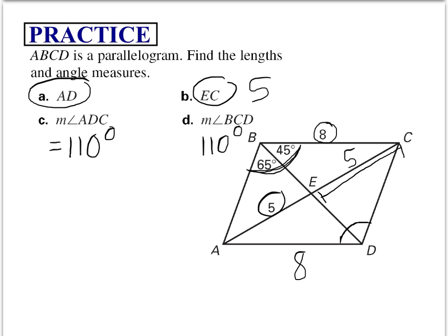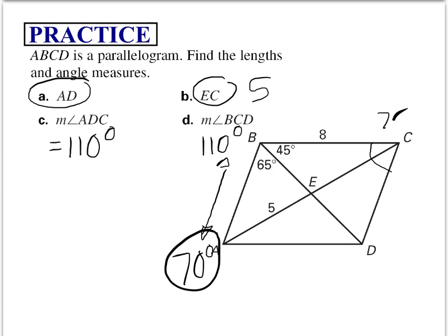Now let me just erase some of this here. Now let's look at the measure of angle BCD. So BCD is this angle here. Now we know this angle is 110, and we know that consecutive angles need to be supplementary. So if this is 110, that means A needs to be 70. If A is 70, then this angle is 70 as well.